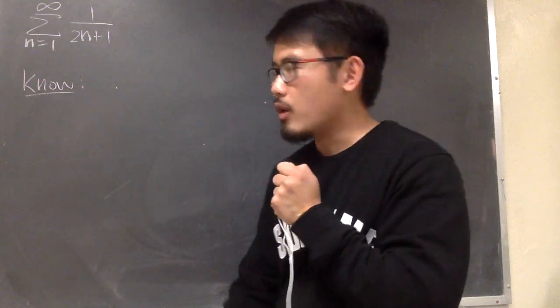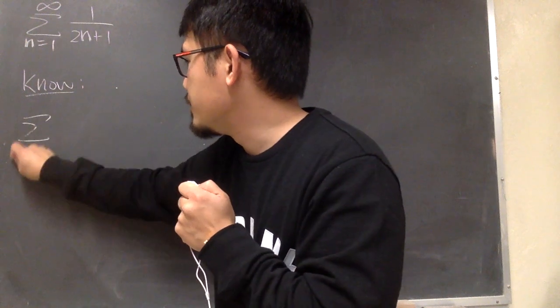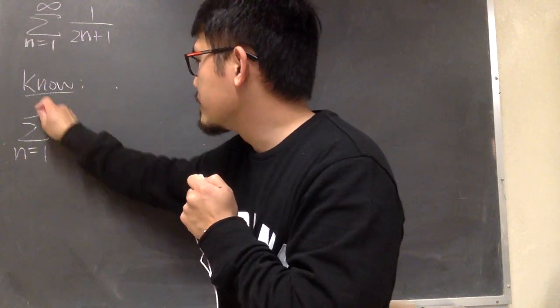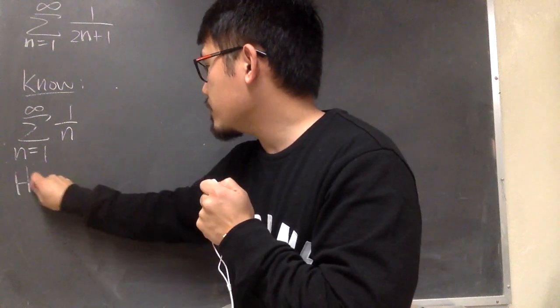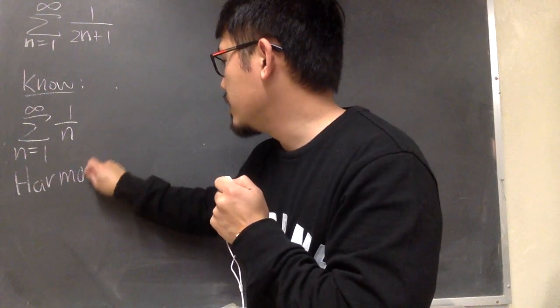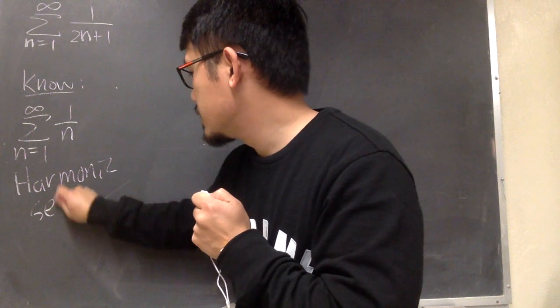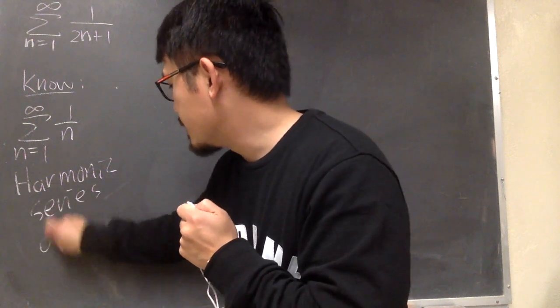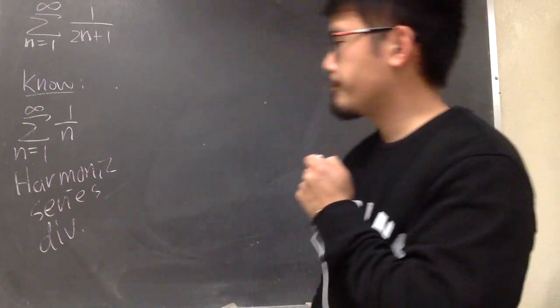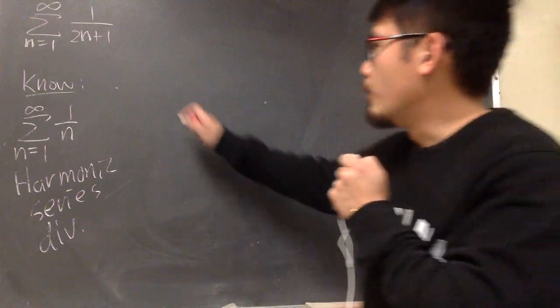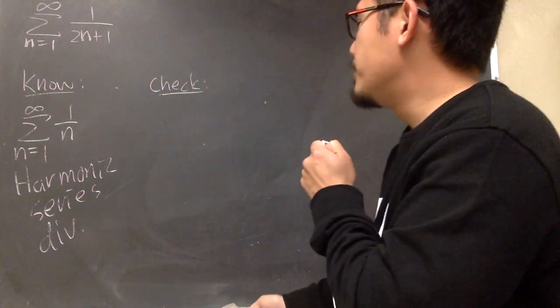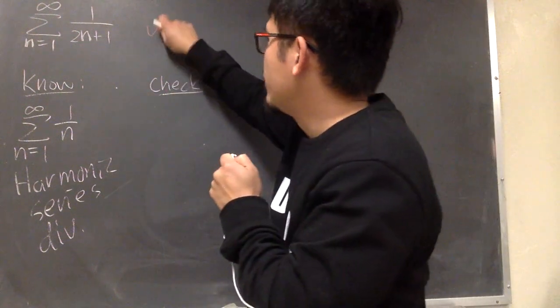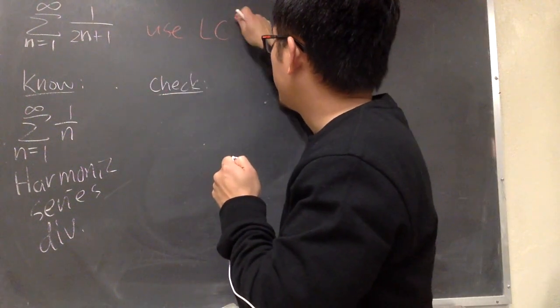Let me put down what I know, which is the harmonic series. We know that sigma as n goes from 1 to infinity, 1 over n diverges, right? And then we are going to do the check now. I'm going to use the limit comparison test. I will just write this down right here: Limit Comparison Test.